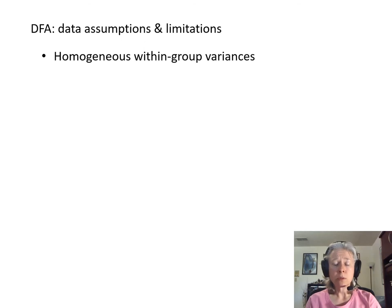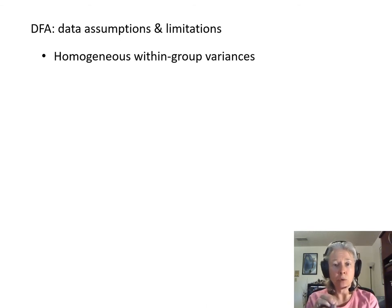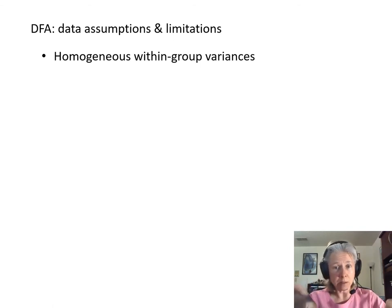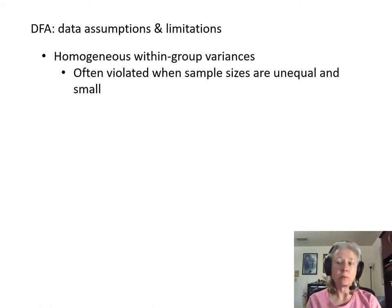DFA assumes that you have homogeneous within-group variances — that is, in fact, what allows you to say that something is a group. The objective of DFA is to minimize distance within groups and maximize distance between groups, so you need very homogeneous variances within your groups. This assumption is often violated when your sample sizes are unequal and small.